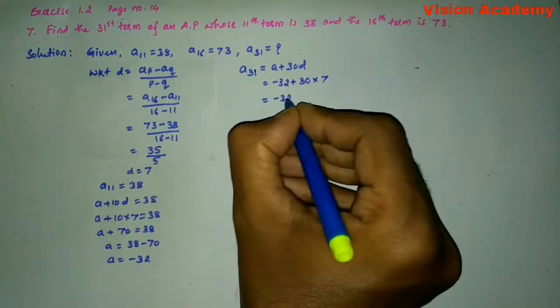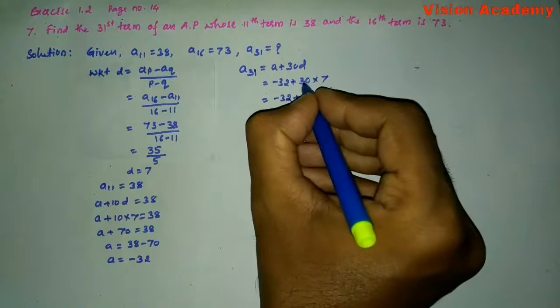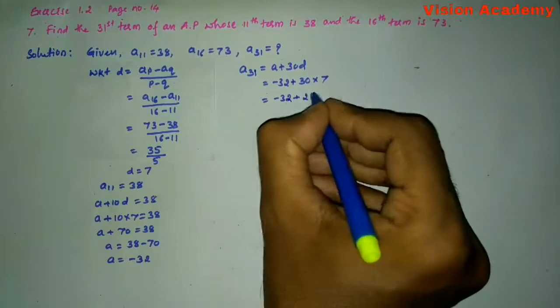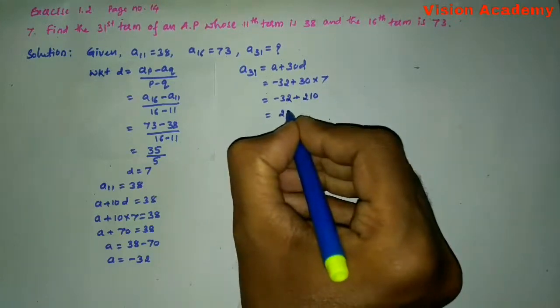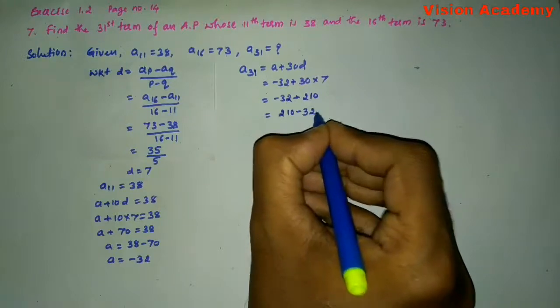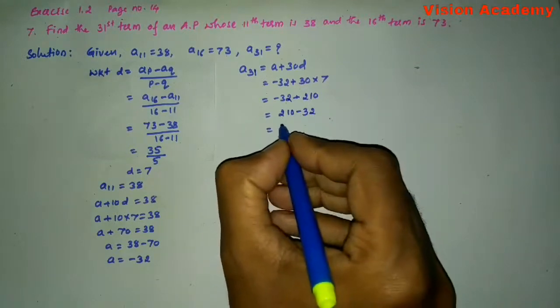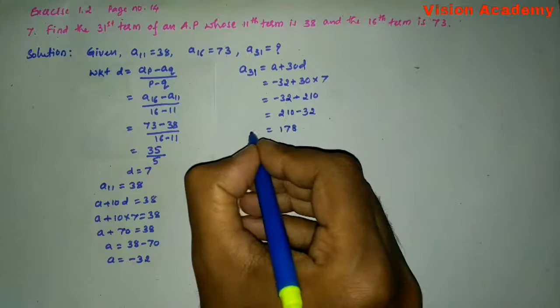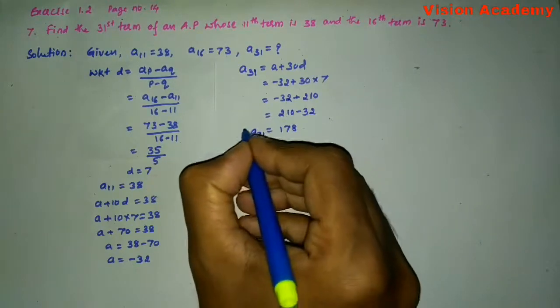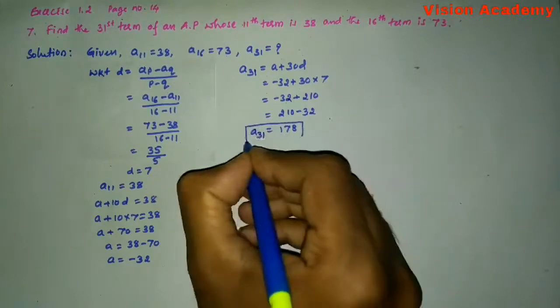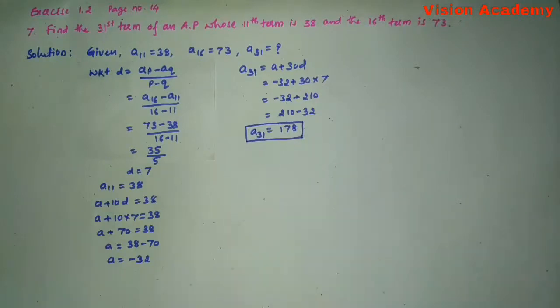Minus 32 plus 30 sevens is 210. 210 minus 32 is equal to 178. Therefore, the 31st term is equal to 178.